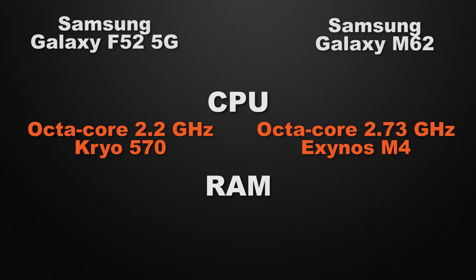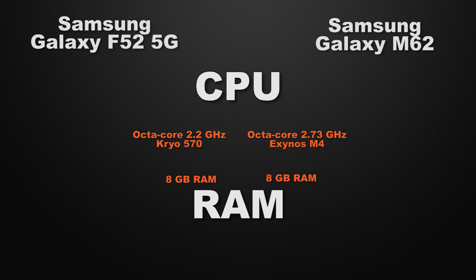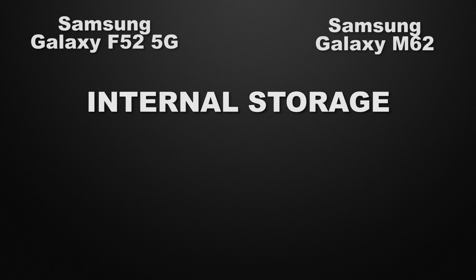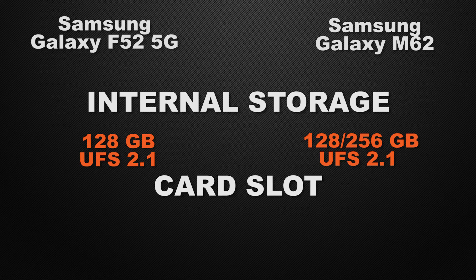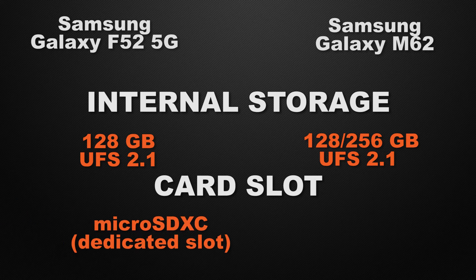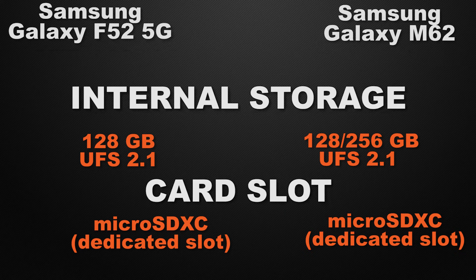About the RAM variants, both the F52 and M62 come with only an 8GB RAM variant, so it's a tie. Talking about internal storage, the F52 comes with only 128GB, whereas the M62 has two options: 128GB and 256GB. So the winner here is the M62 because it has a multi-storage option. About external storage, both devices have a dedicated card slot, so it's a tie.